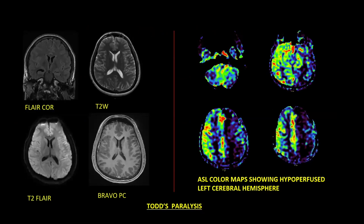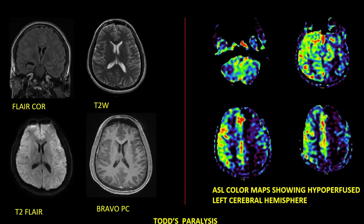Here we see a 21-year-old patient who presented with acute onset right-sided weakness. On diffusion, there was no area of restriction to suggest hyperacute or acute infarct. On FLAIR images, however, there was relative hyperintensity in the left cerebral hemisphere. ASL color maps clearly showed hypoperfusion in the left cerebral hemisphere, in keeping with post-ictal change. This was a case of Todd's paralysis. The patient was followed up at a 24-hour gap and this hypoperfusion reverted back to normal.